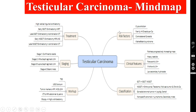The first thing is the risk factors. Which patients are more prone to develop testicular carcinoma? Those who have cryptorchidism or undescended testis, those with a family history of testicular cancer, those who have had contralateral carcinoma of the testis already treated — now they have more risk to develop cancer in the other testis also — and those suffering from Klinefelter's syndrome. All these are risk factors to develop testicular carcinoma.